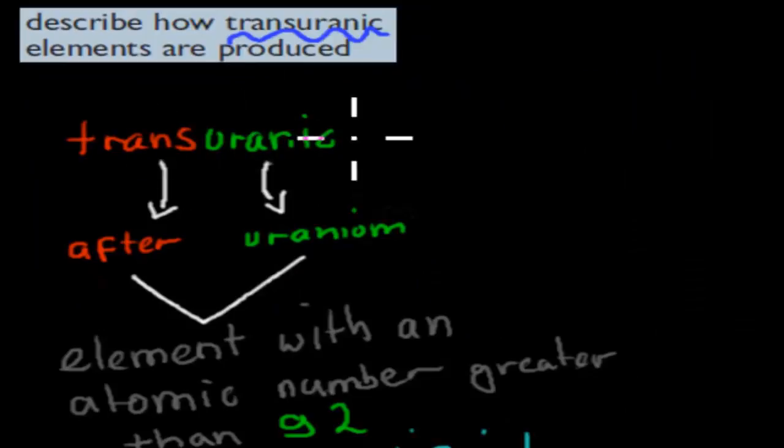Transuranic—there's two parts of that word. Uranic comes from uranium, so uranium just means uranium. And you can imagine transuranic to mean after uranium, so whatever elements come after uranium. Uranium had the atomic number of 92, so elements with an atomic number greater than 92 are transuranic elements.